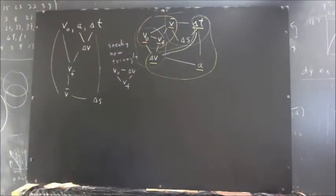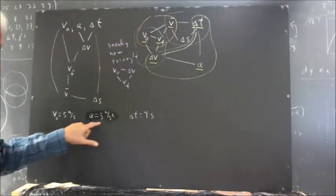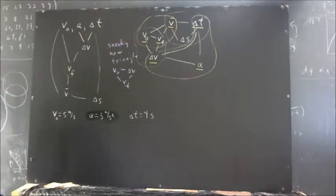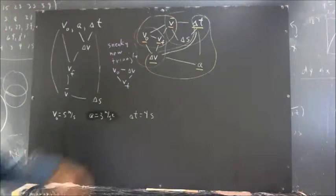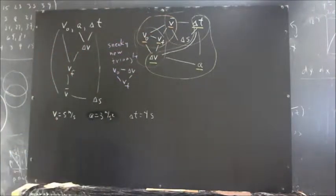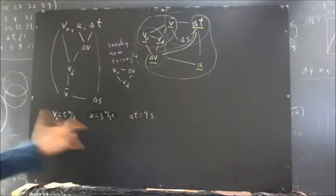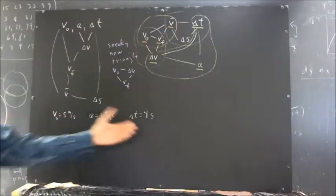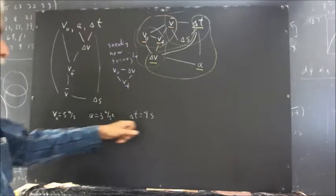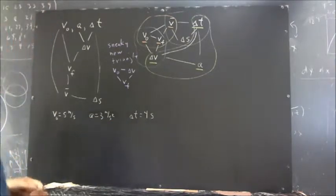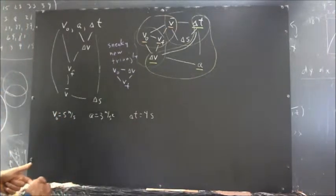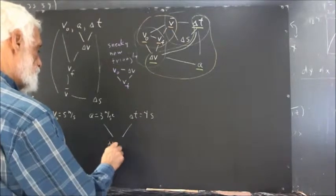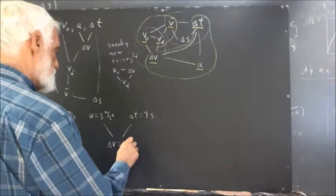Suppose, for example, we have V naught equal to 5 meters per second, acceleration 3 meters per second squared, and delta T equals 4 seconds. Based on our understanding of how these quantities are related, what can we determine? We can't put initial velocity together with acceleration and do anything directly. But A and delta T — knowing A as the rate at which velocity changes with respect to clock time, and delta T as a 4-second change — we can put these together to find that our change in velocity equals 12 meters per second.